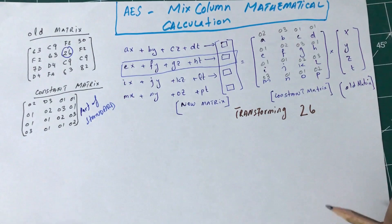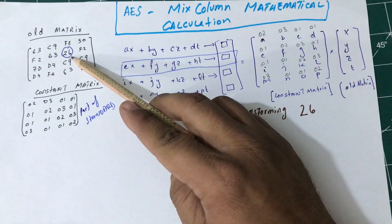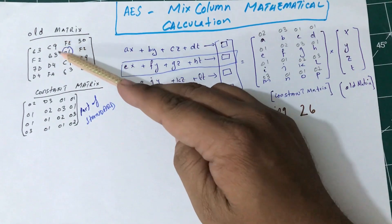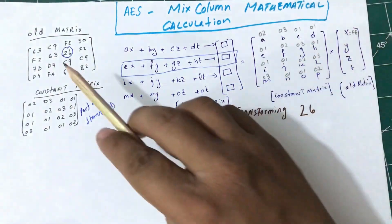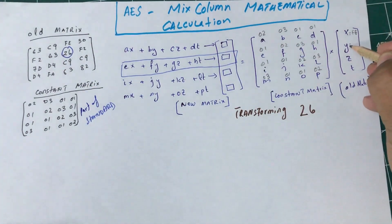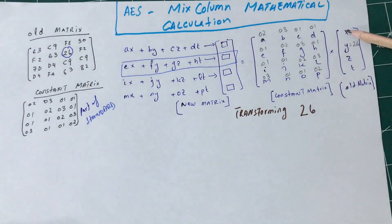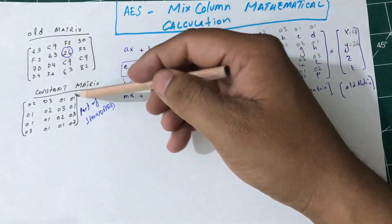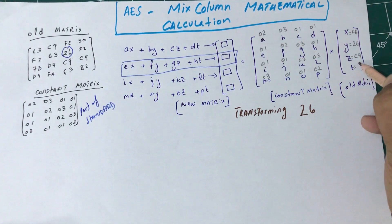So what do I need to do? I have X, Y, Z, D. I want to transform 26, so I'm not just going to pick up one value — I'm going to pick up the entire column. In place of X I'm going to write FE, in place of Y I'm going to write 26. The actual value I want to transform is 26, but I'm picking up the entire column where 26 is located.